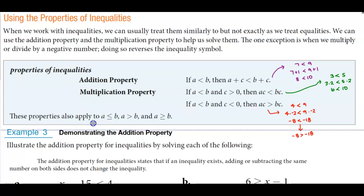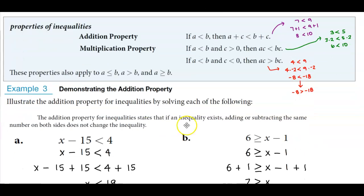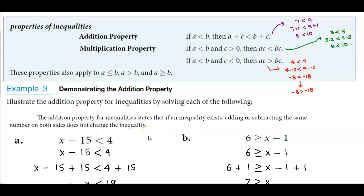These properties also apply to a is less than or equal to b, a is greater than b, and a is greater than or equal to b. Example three: demonstrating the addition property. The addition property for inequalities states that adding or subtracting the same number on both sides does not change the inequality.